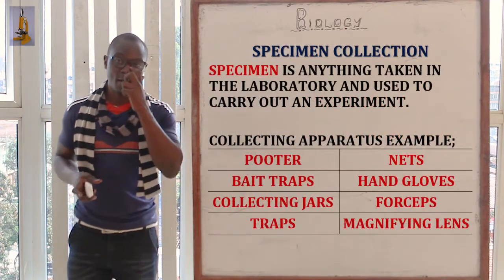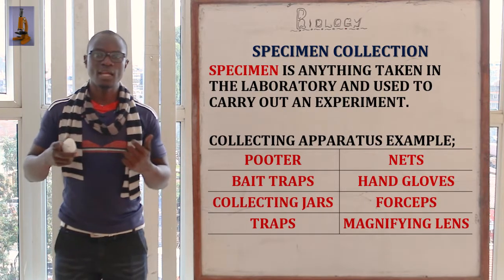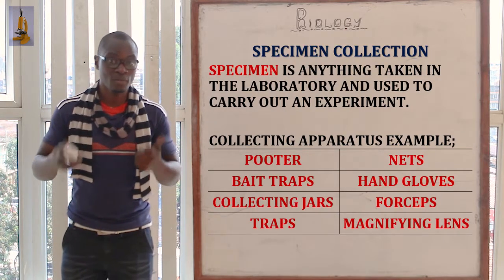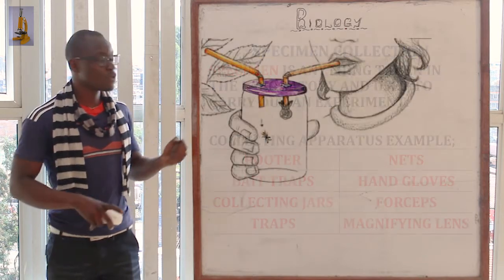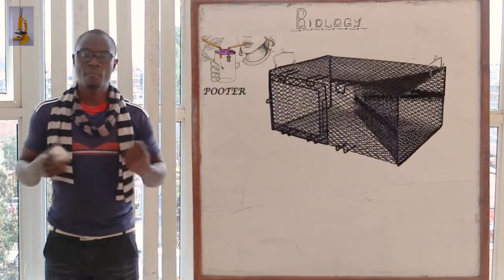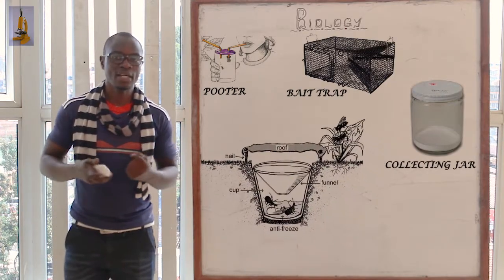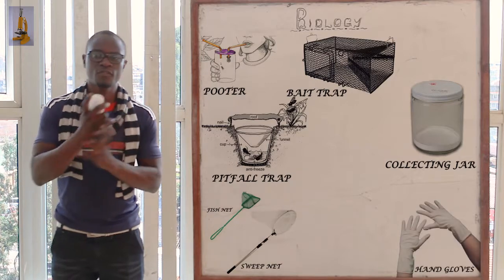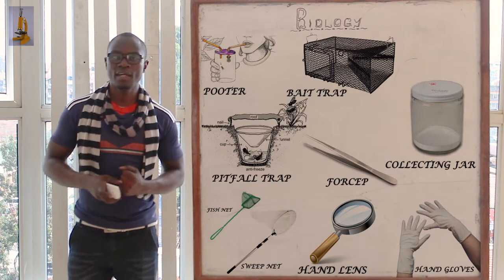Now let's look at specimen collection. First, what is a specimen? A specimen is anything taken into the laboratory to be used for an experiment. There are different apparatus for collecting specimens: the pooter, used to suck small crawling organisms on trees or walls; bait traps for trapping rodents; collecting jars; various traps for capturing organisms; a net; hand gloves for safety; forceps; and the magnifying glass.